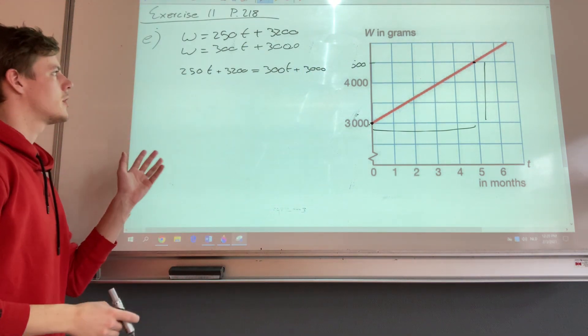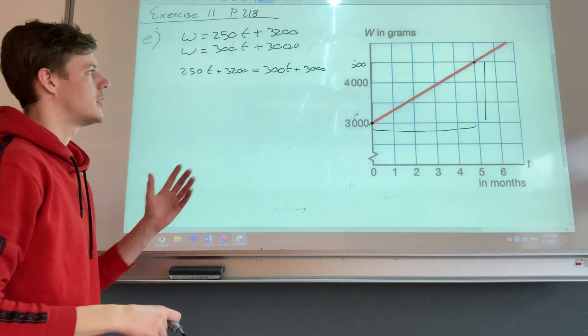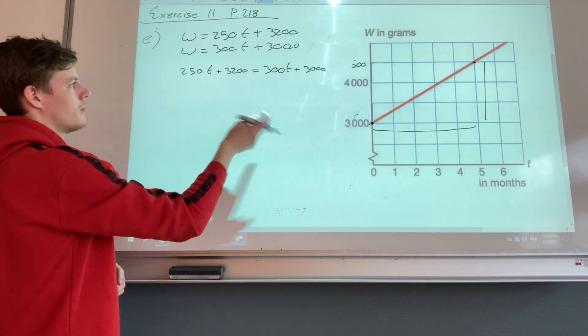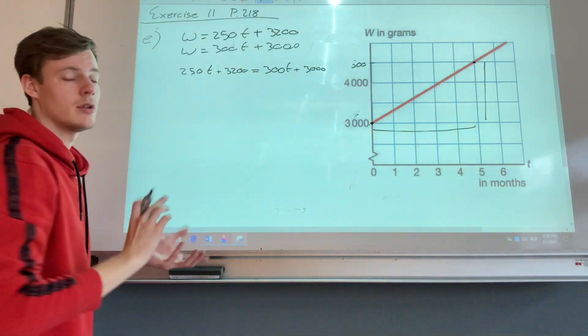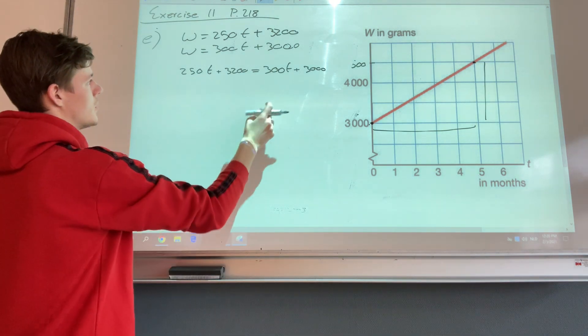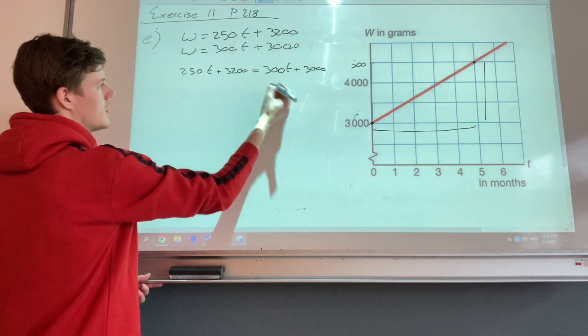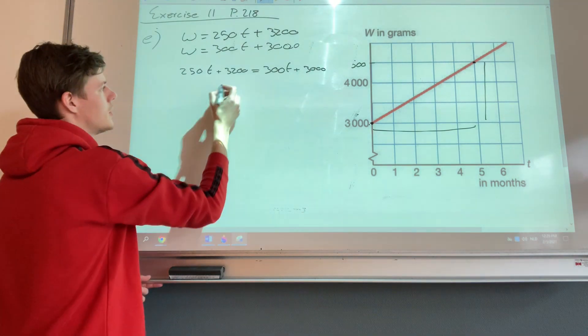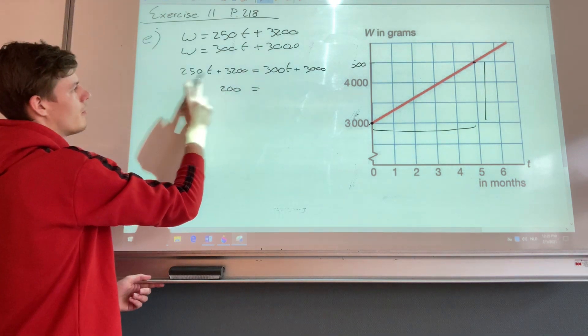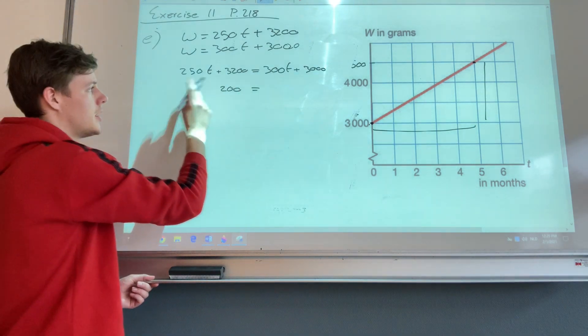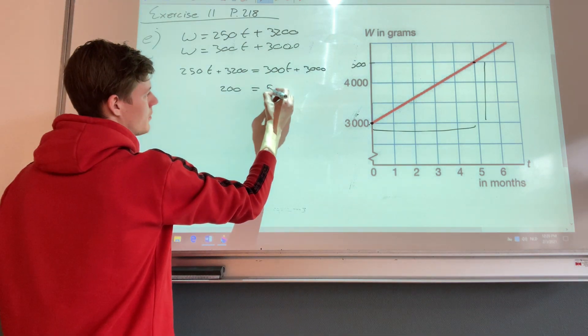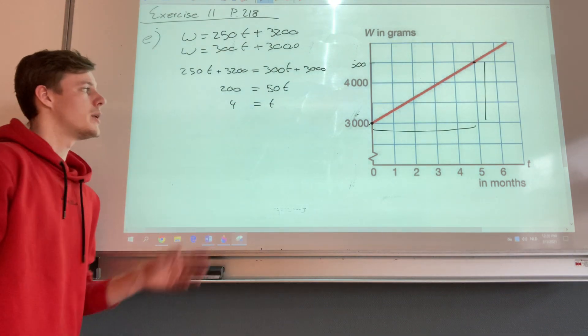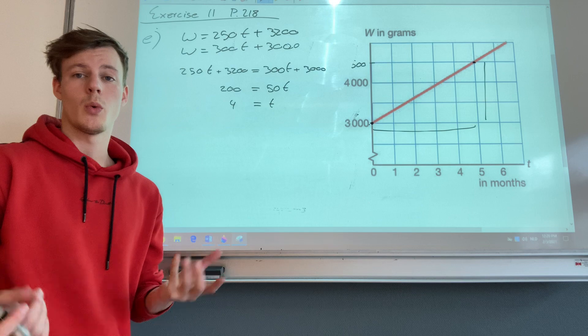So 250t plus 3,200 is equal to 300t plus 3,000. Okay, so we move the t's and the numbers to each side. Let's put t in this area and the numbers here, which gives us 3,200 minus 3,000 is 200, and 300t minus 250t gives us 50t. And t equals 4. Which means that after 4 months, both babies weigh the same.